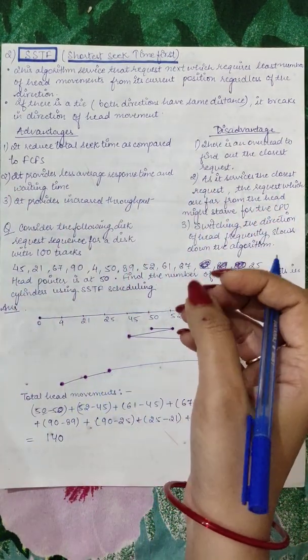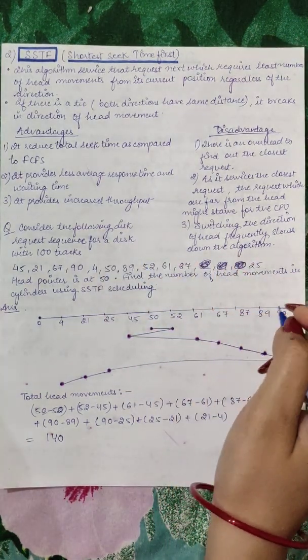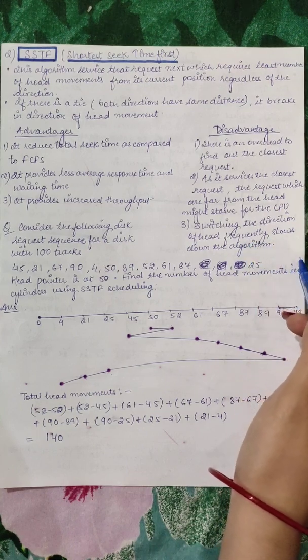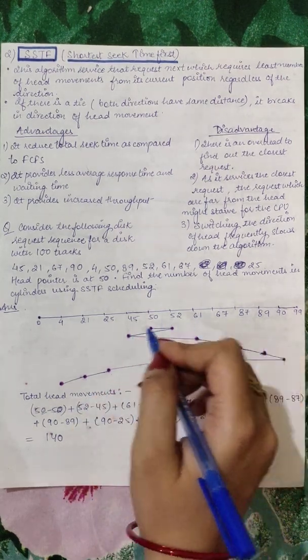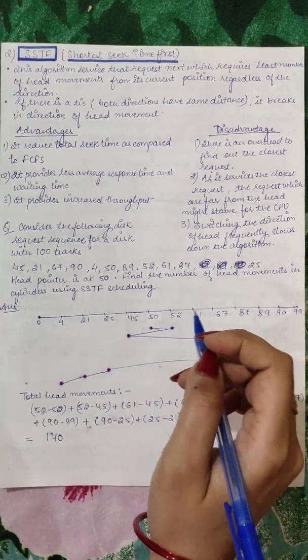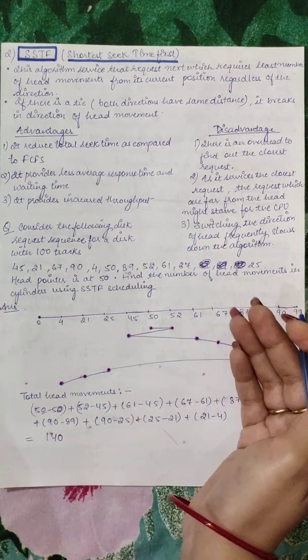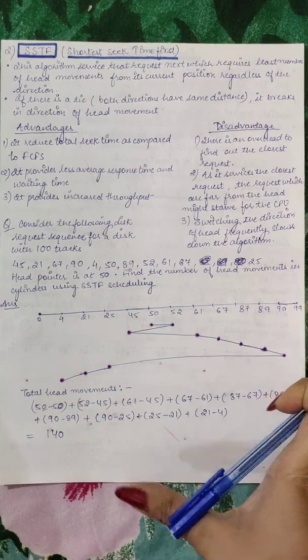In FCFS, there will not be starvation in the corners because they are in order. Services will be given to each of the requests. Lastly, switching the direction of head frequently slows down the algorithm. And your head movement is a lot more. Because your direction of head can change based on the closest request. So it will affect the performance of the algorithm. It will become slow.